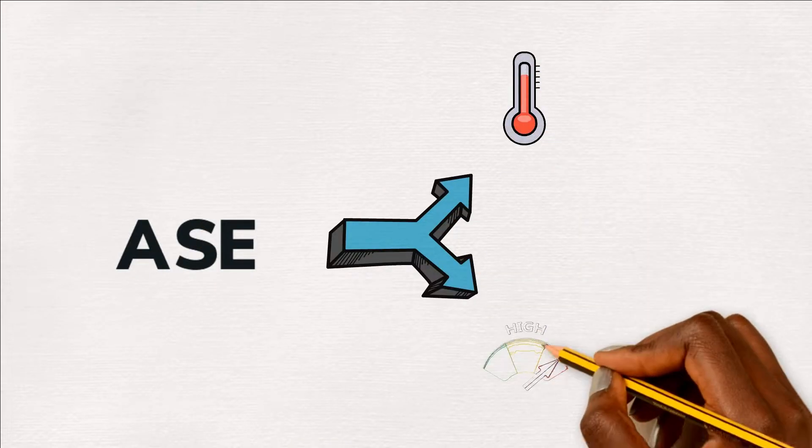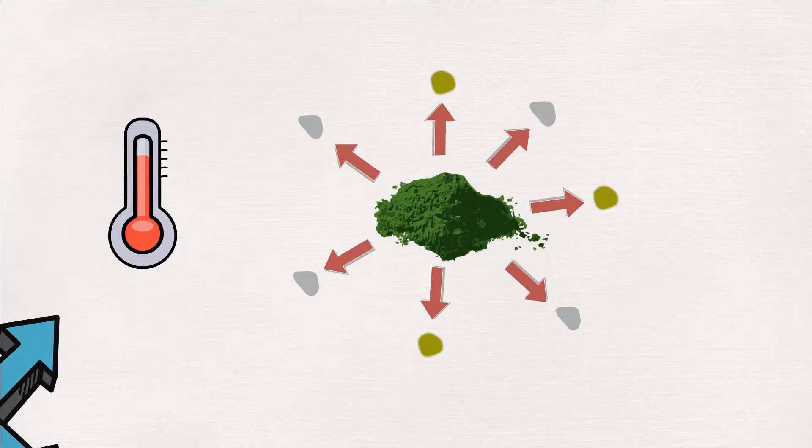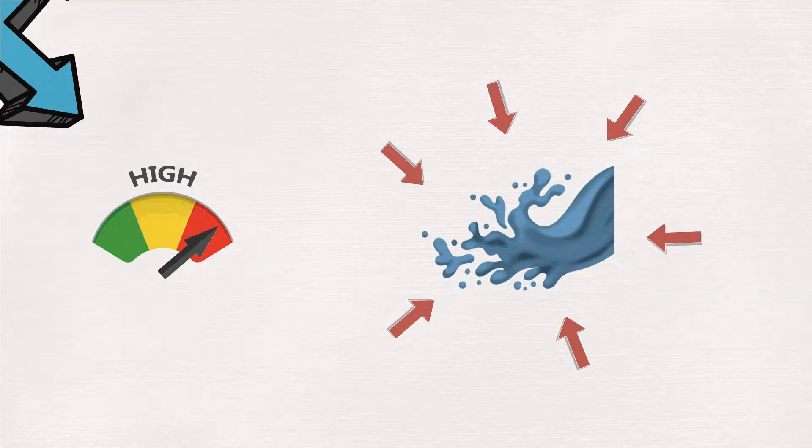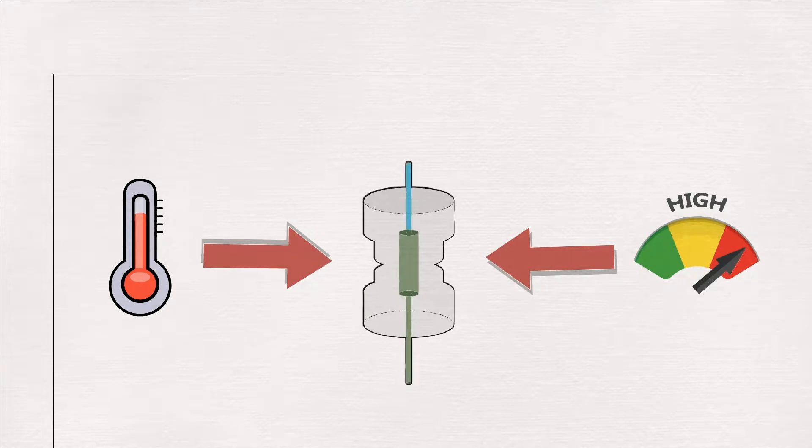ASE uses both high temperatures and pressure. The high temperature increases the extraction efficiency of the interesting analytes, while high pressures keep the solvent in liquid state. Both combined parameters result in better extraction performance by increasing the analyte diffusion into the solvent.